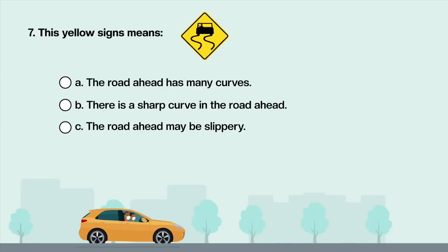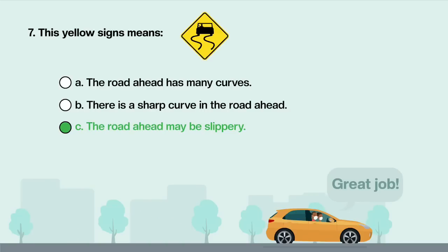This yellow sign means: A. The road ahead has many curves. B. There is a sharp curve in the road ahead. C. The road ahead may be slippery. Answer is C: The road ahead may be slippery.